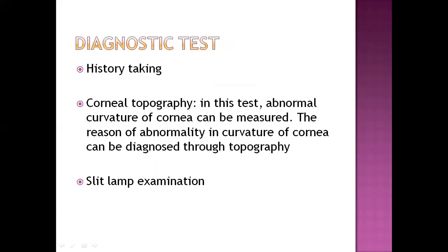To diagnose this disease, first we need history taking — finding out if the patient had any previous eye disease, if they were occupationally exposed to ultraviolet radiation, or if they had taken any drugs related to a systemic illness. Another diagnostic test is corneal topography, in which the shape of the cornea and any abnormality of the cornea can be measured through a device called photographing.